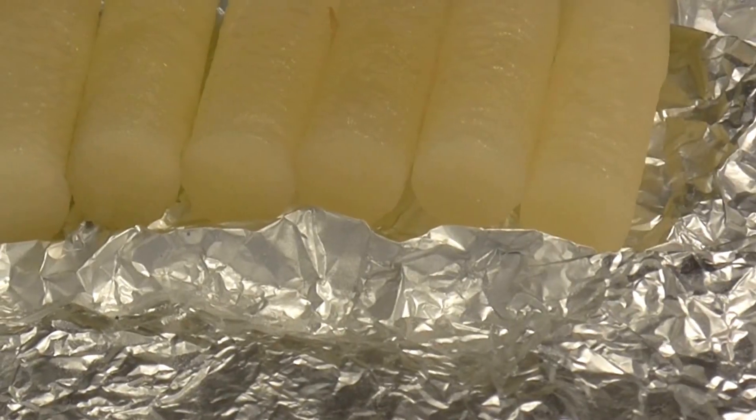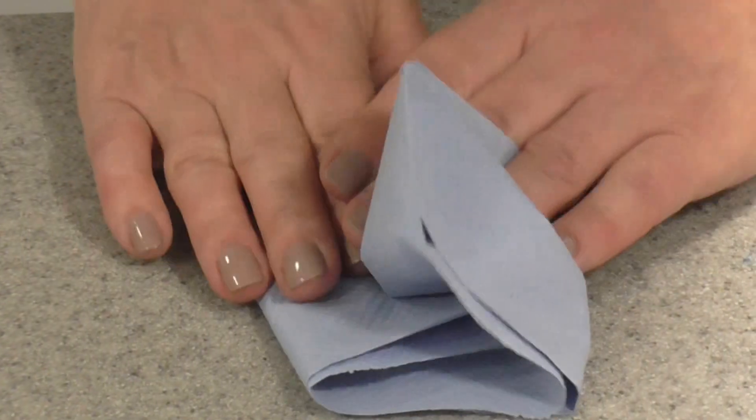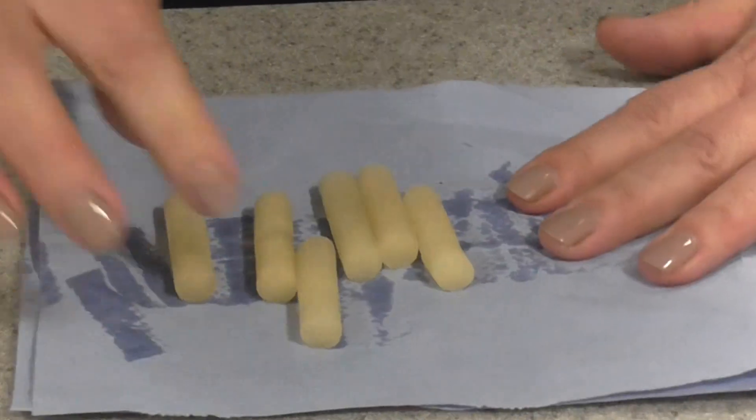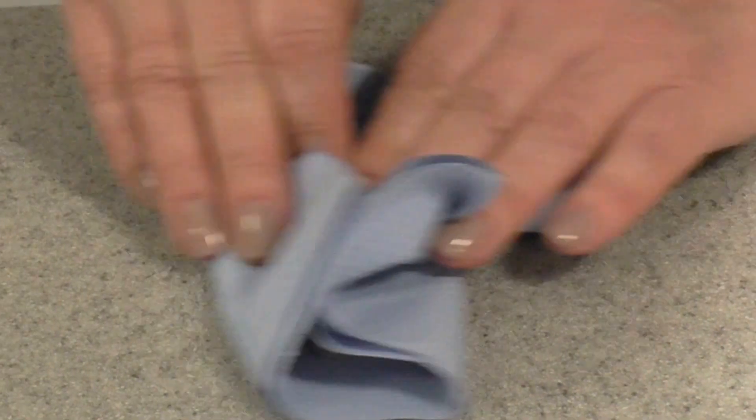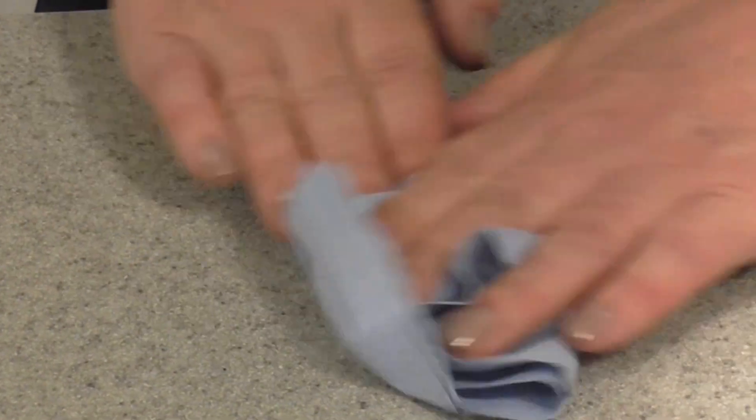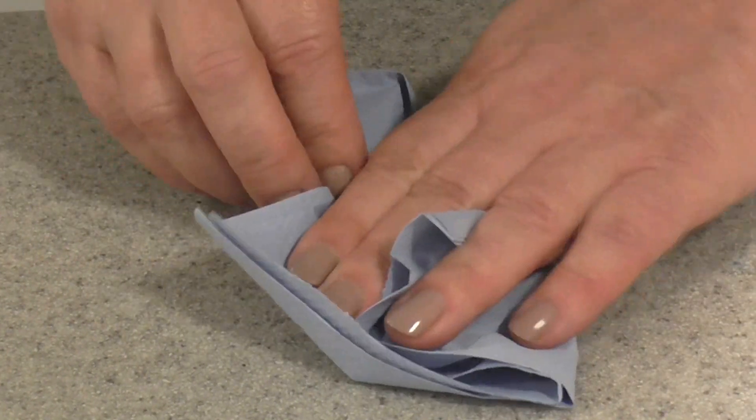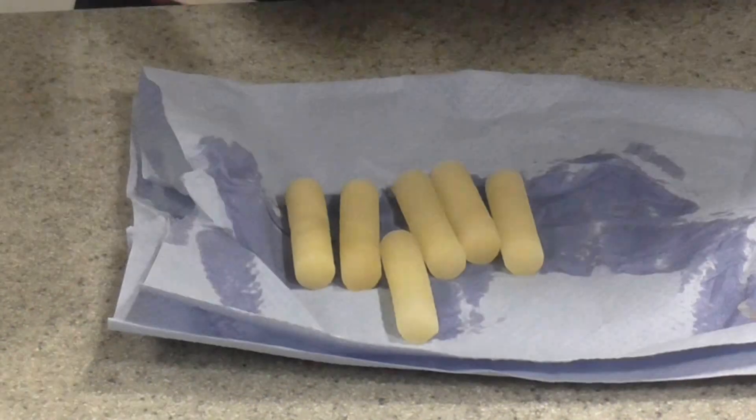Now the next thing we're going to do, once we've prepared our little chips, all very similar in size, we need to make sure they are thoroughly blotted dry. Just make sure you've got no potato skin left on the ends of them. Let's blot those to get rid of any excess water, any extra moisture.